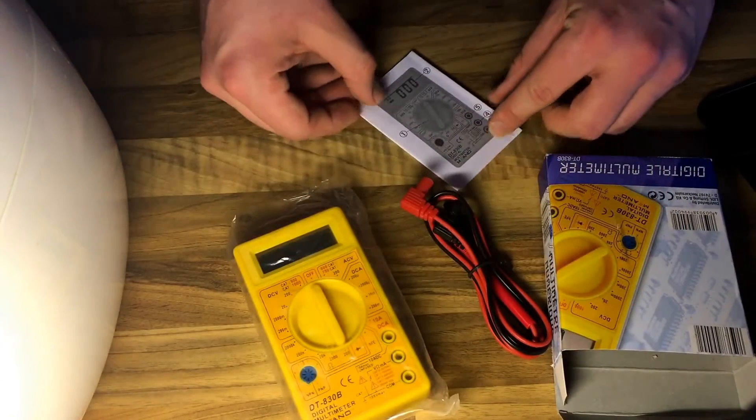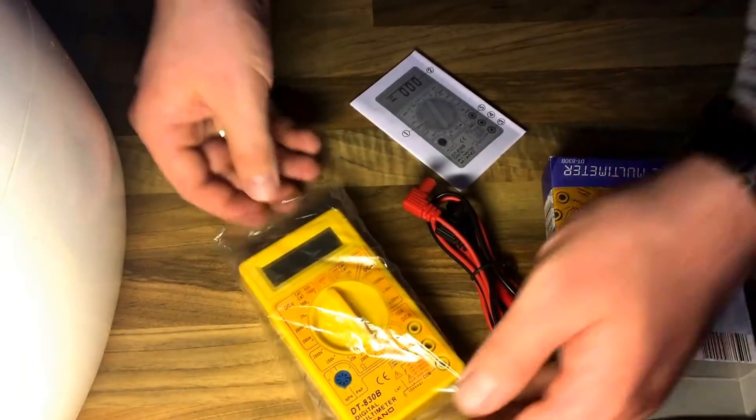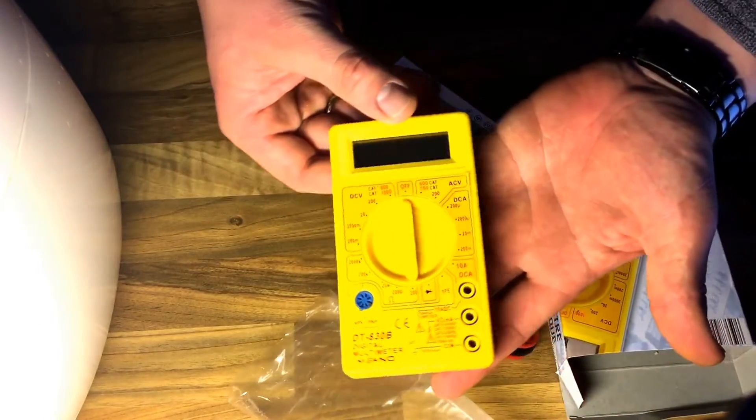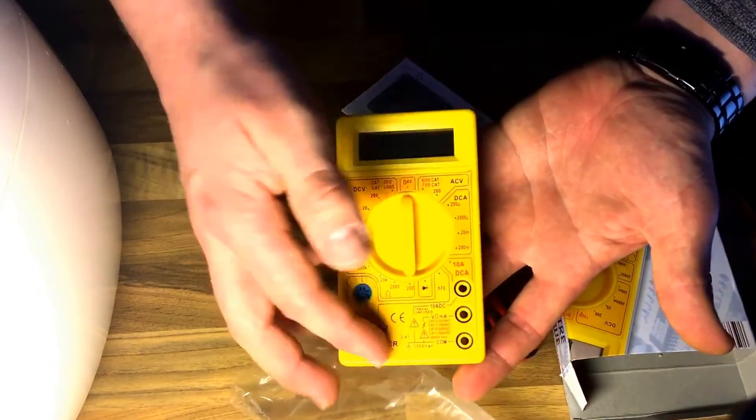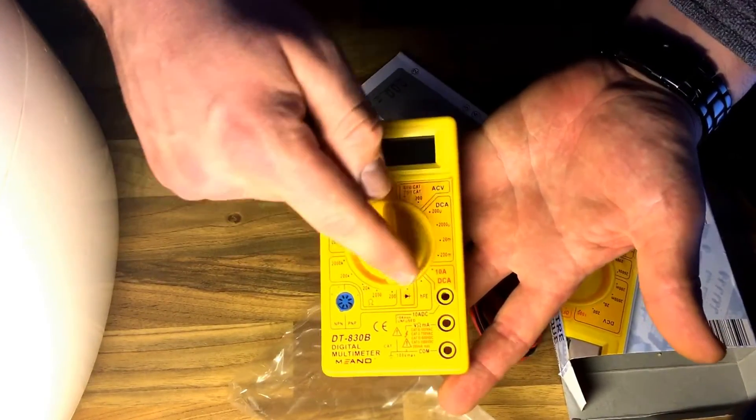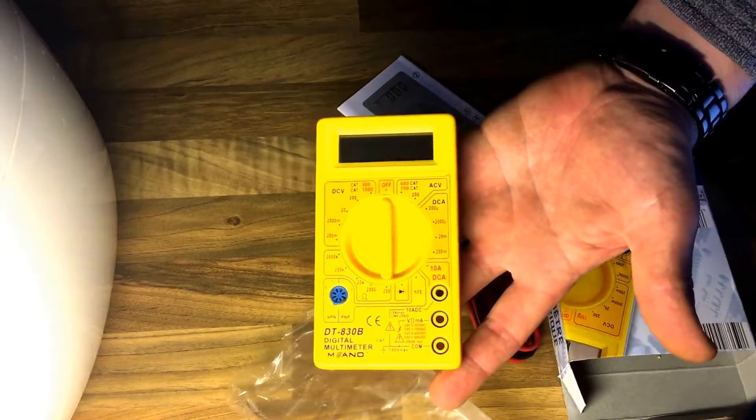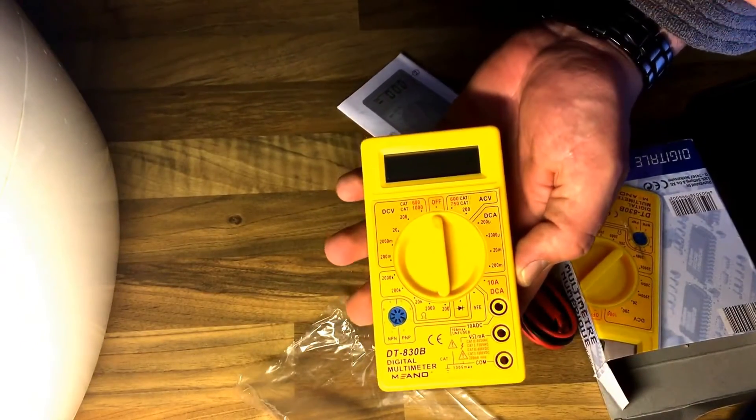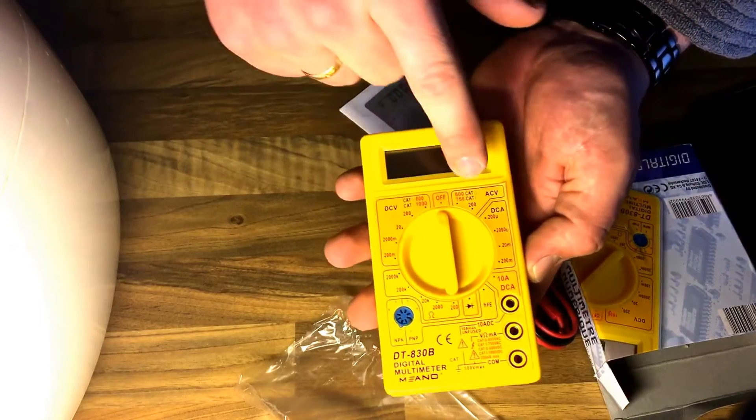Okay, what the multimeter contains: one rotary switch. Let's take a look at the measuring range. Over here...